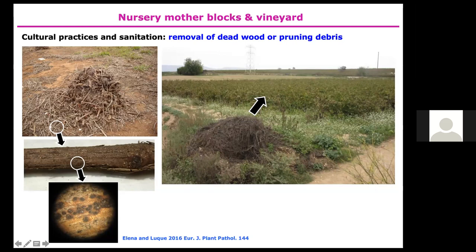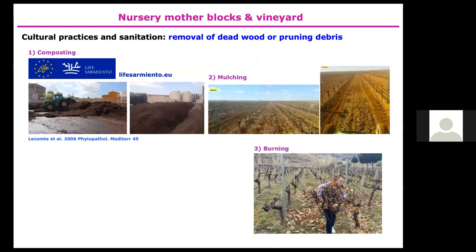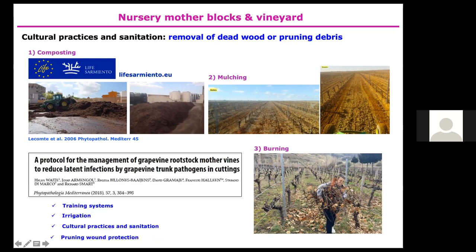Removing and destroying all diseased wood from the vineyard remains the best practice to reduce new infections for all GTD pathogens affecting mother blocks and mature plants. Infected wood and pruning debris can be destroyed by composting, mulching, incorporation into the soil, or burning. Burning has several environmental disadvantages, so it is being replaced by composting and mulching. In France, researchers showed composting of vine material with cheap manure and garden residues for six months successfully eliminated inoculum of GTD pathogens from vine tissue.